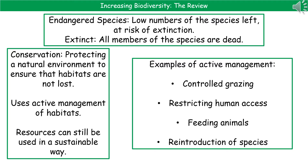Two key terms we need to know: endangered is when we've only got a low number of the species left, so they are at risk of becoming extinct. An extinct species is one where all members of it are dead. To try to prevent things becoming extinct, we use conservation, which is protecting a natural environment to ensure that habitats are not lost.